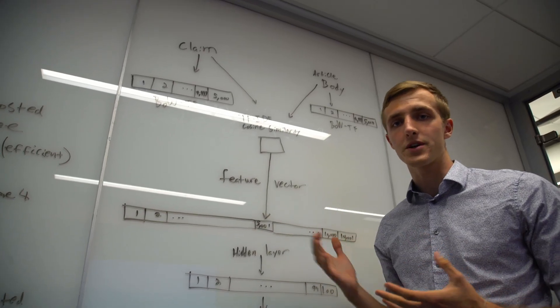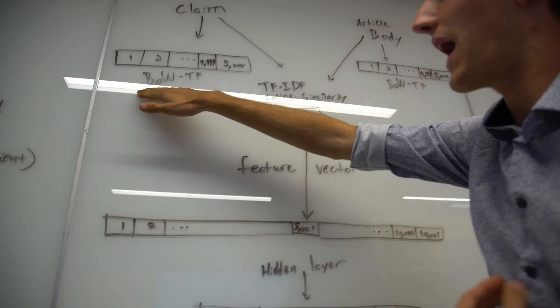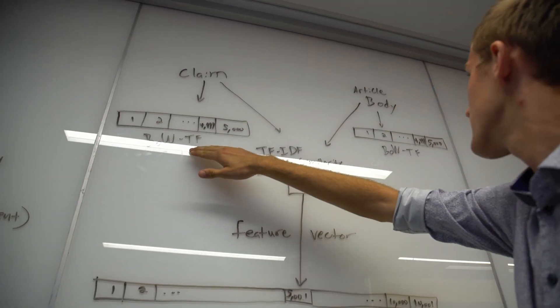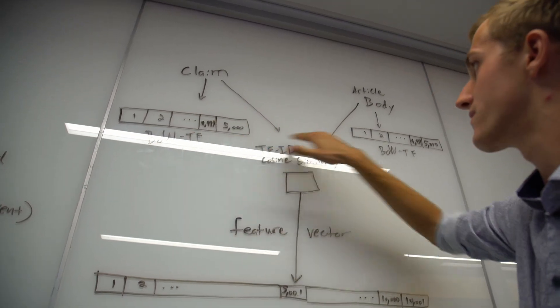Let me go over our machine learning model. We input a claim and an article body, then put that through a bag of words with term frequency analysis to vectorize our input into 5,000 vectors for each one.